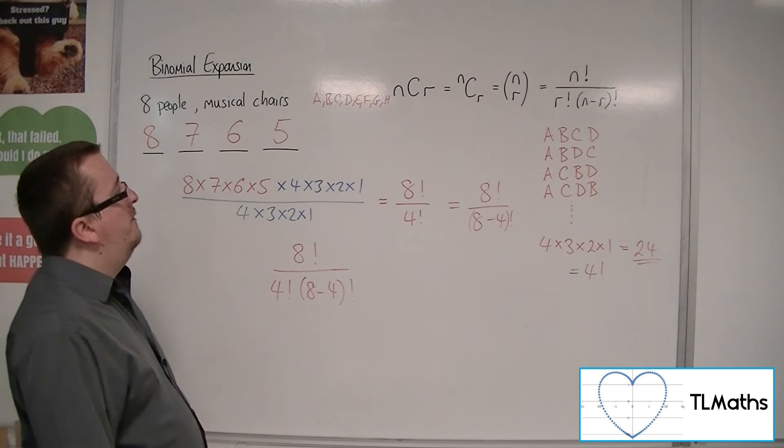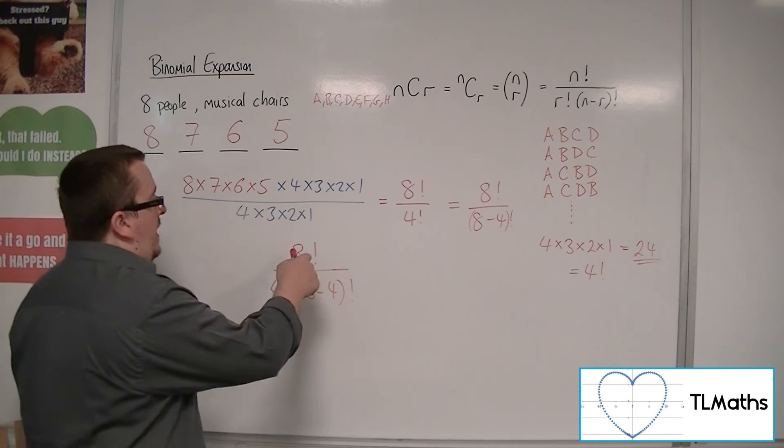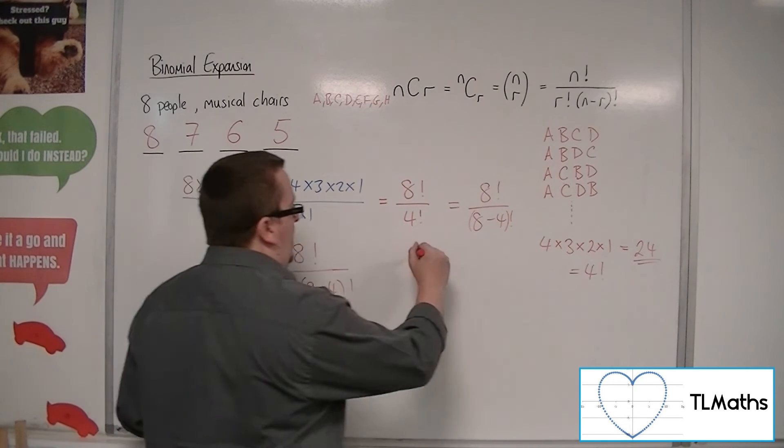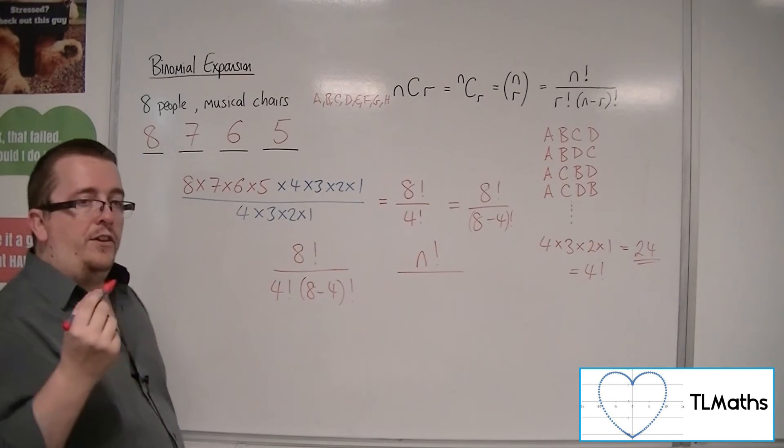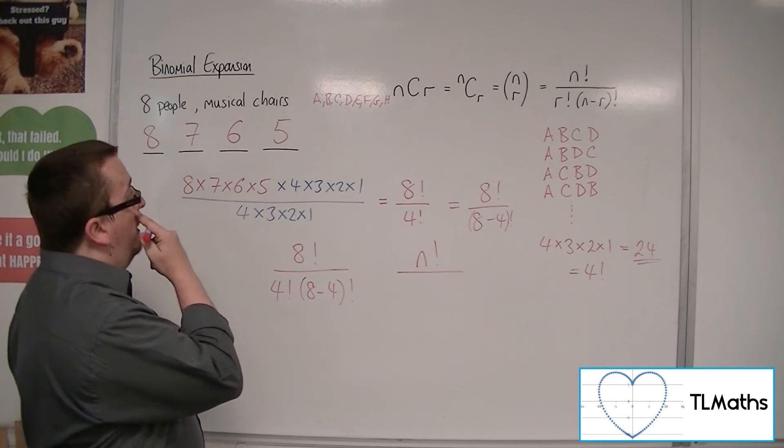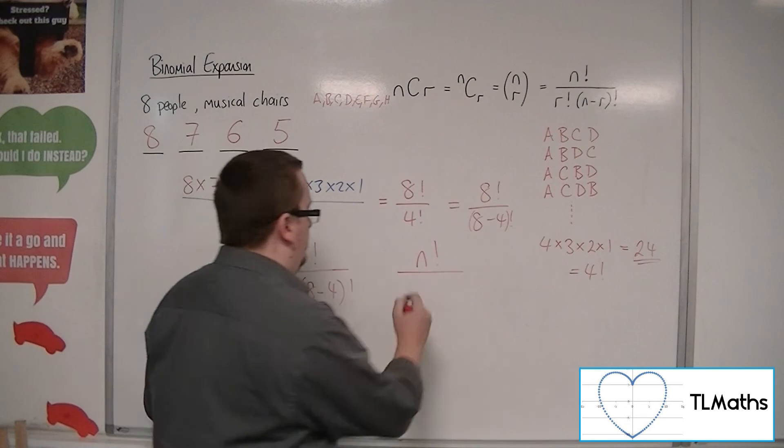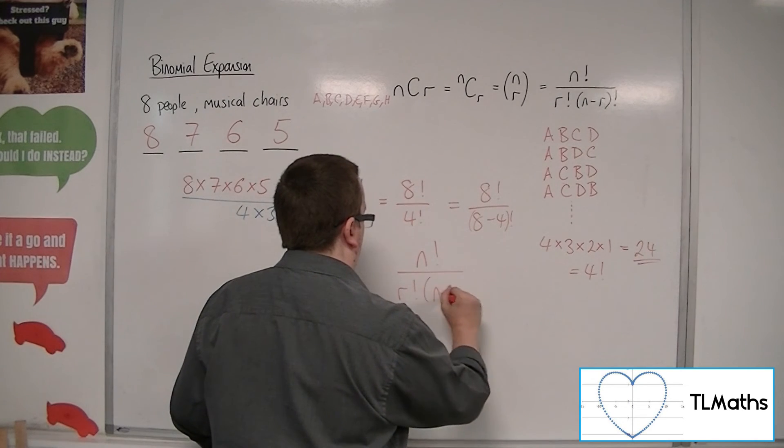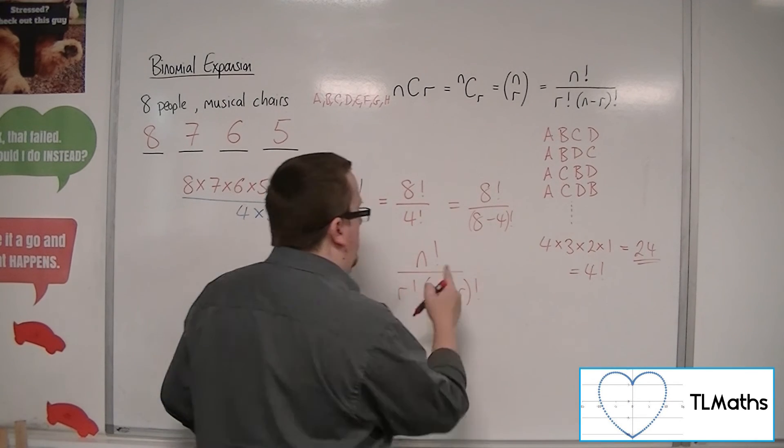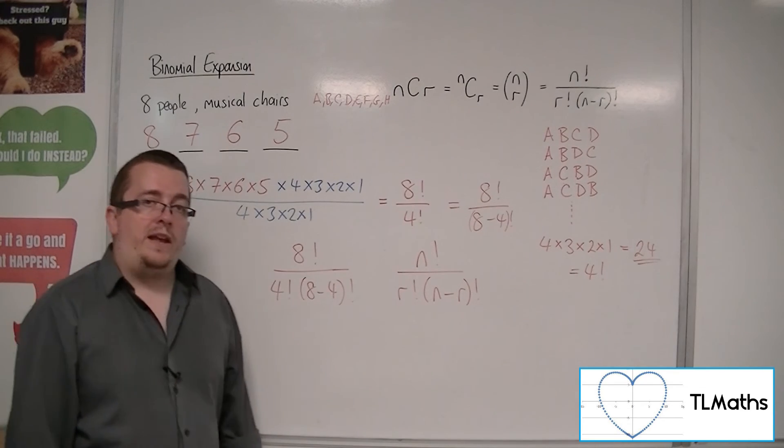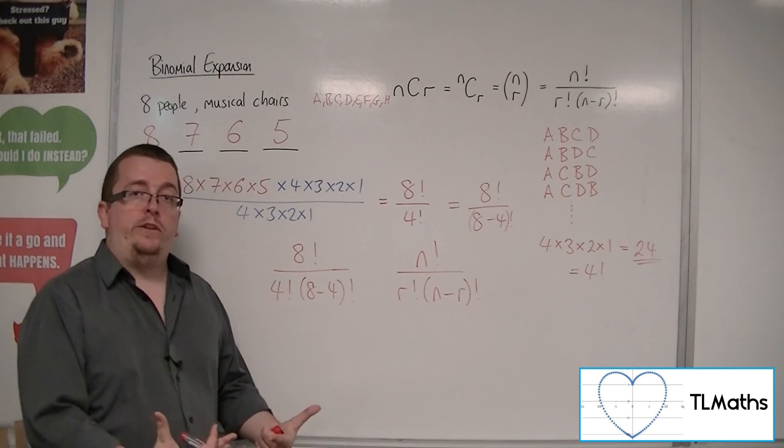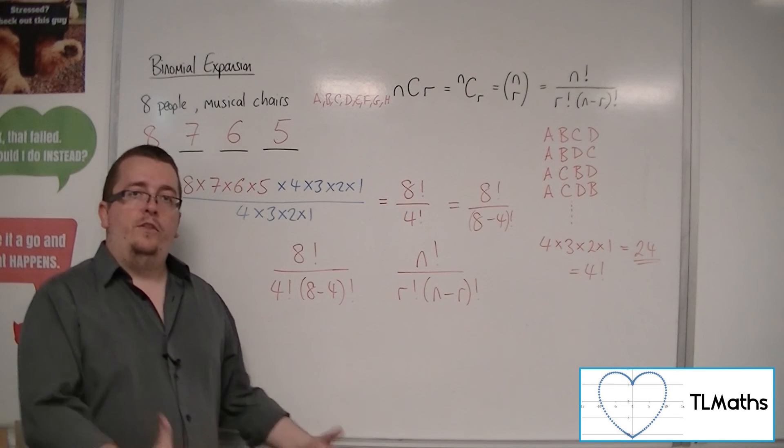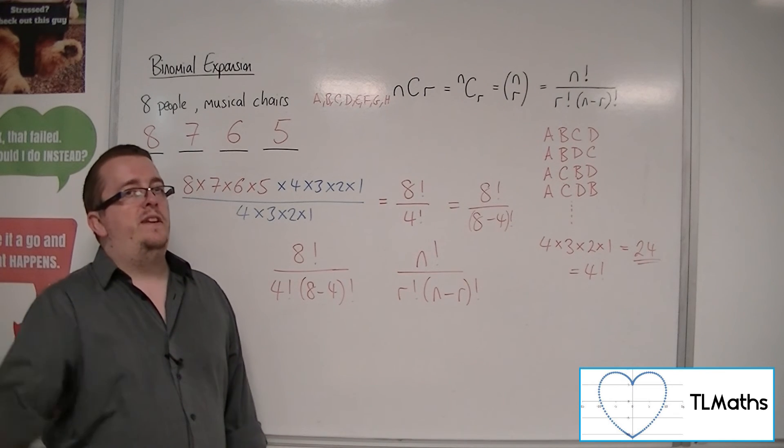This is a basic example of it, where if I had N people playing musical chairs and I had R seats for them to sit in, then this represents the number of combinations of people that I could have left in the next round.